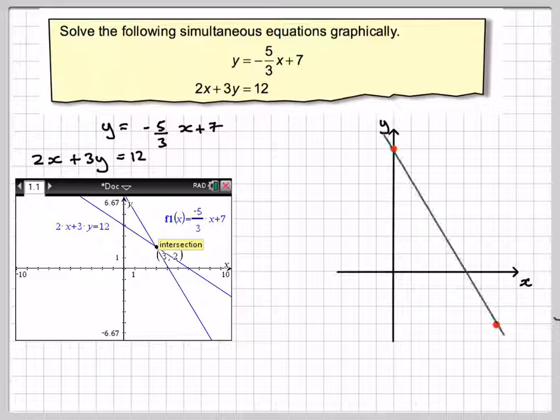Mark on the first graph. Okay, it would just be a sketch, so just put it roughly in the right position, although I am using the squares here. Label it, y is equal to minus 5 over 3x plus 7.